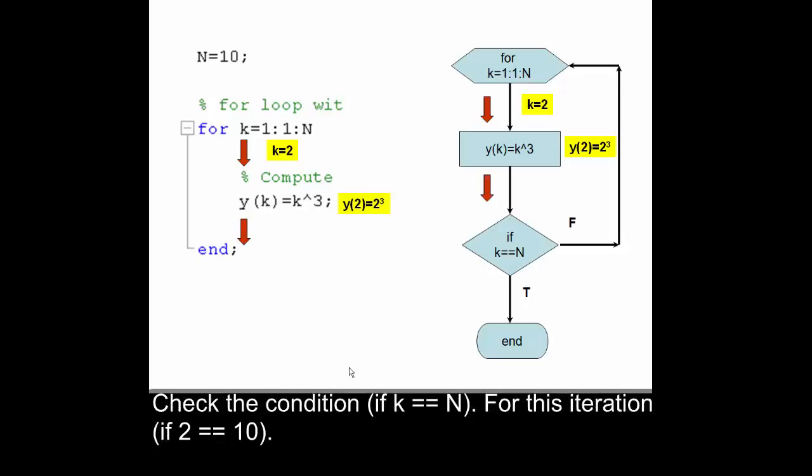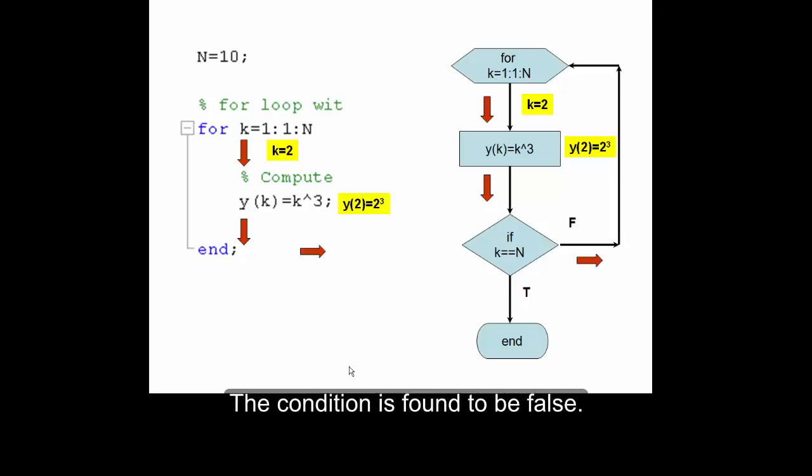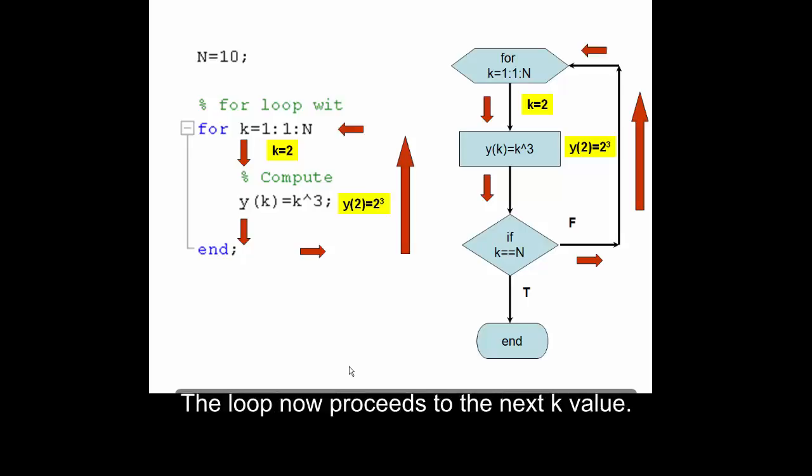Check the condition if k equals n. For this iteration, if 2 equals 10, the condition is found to be false. Return to the beginning of the loop. The loop now proceeds to the next k value.